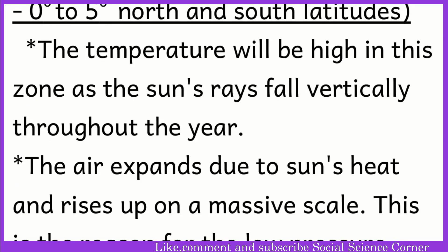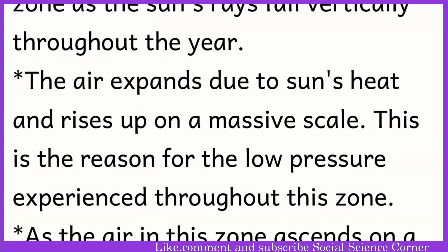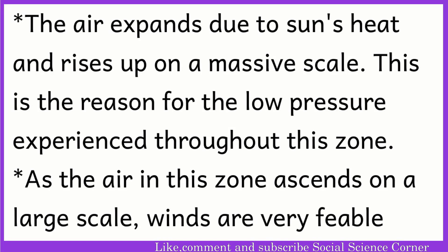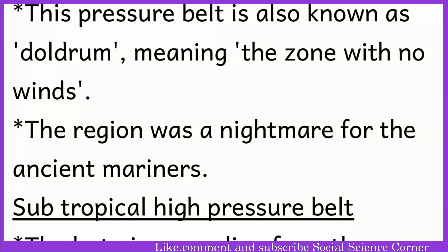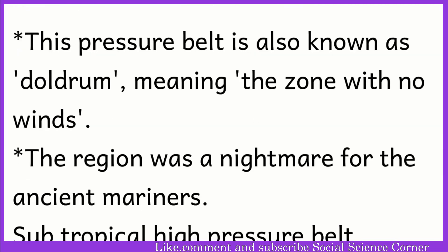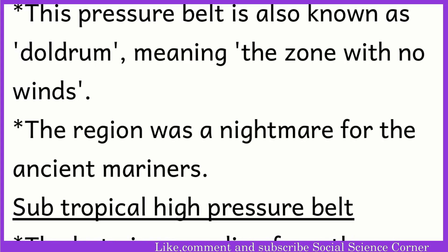The equatorial low pressure belt is positioned between 0° to 5° north and south latitudes. The temperature is high in this zone as the sun's rays fall vertically throughout the year. The air expands due to the sun's heat and rises up on a massive scale, which is the reason for low pressure throughout this zone. As the air ascends on a large scale, winds are very feeble here. This pressure belt is also known as the Doldrums, meaning the zone with no winds, and was a nightmare for ancient mariners.